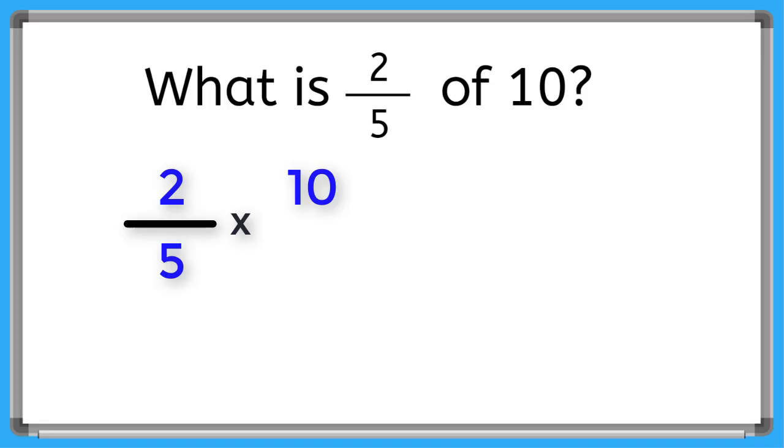When working with fractions, let's make sure every number has a numerator and a denominator. So for our whole number ten, we'll just give it a denominator of one. And now we can multiply straight across our numerator. Two times ten is twenty, and straight across our denominator, five times one is five.